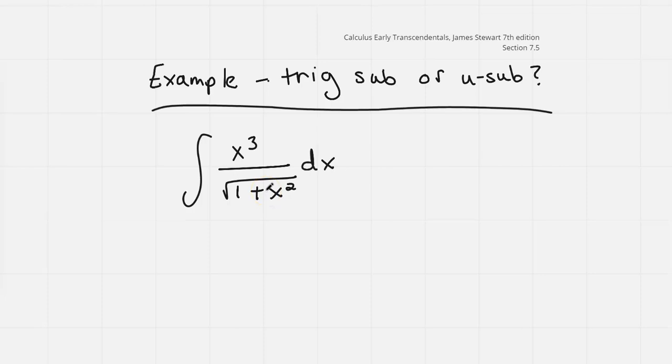I remember I have a trig identity of 1 plus tangent squared theta equals secant squared theta. It takes two terms and makes it into one term. So let's let x equal tan theta. That means dx is going to equal secant squared theta d theta. And so I make all those substitutions.